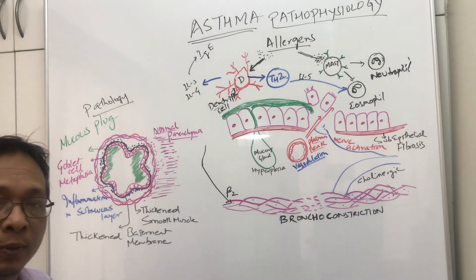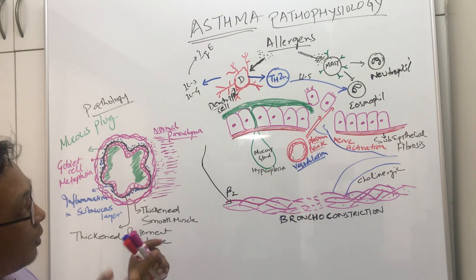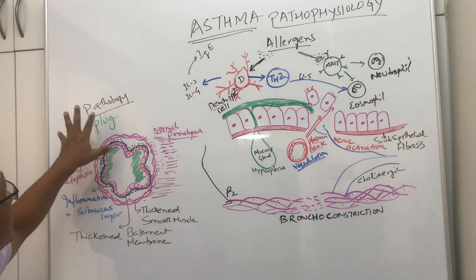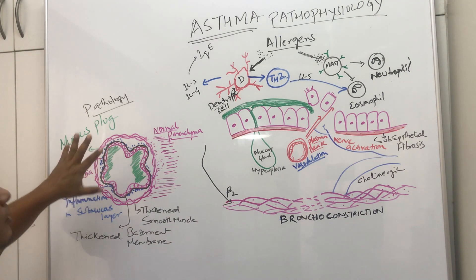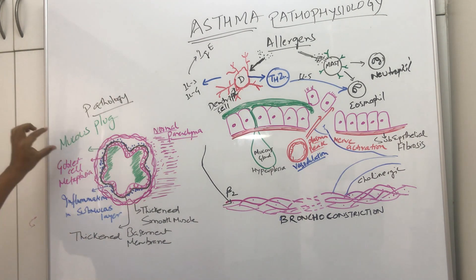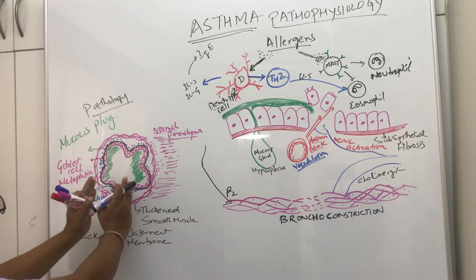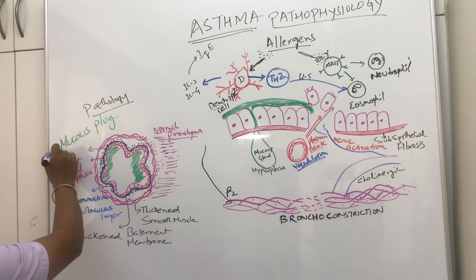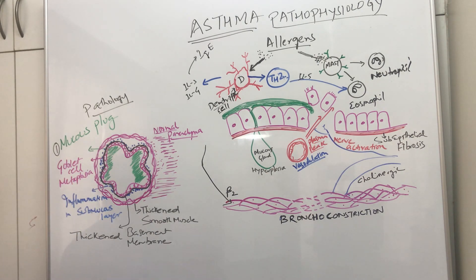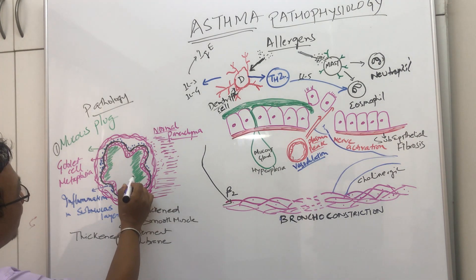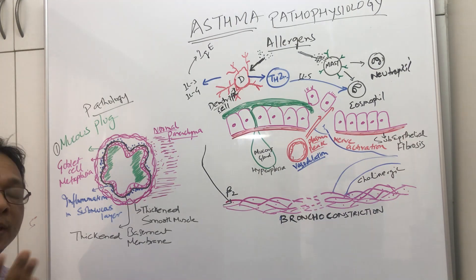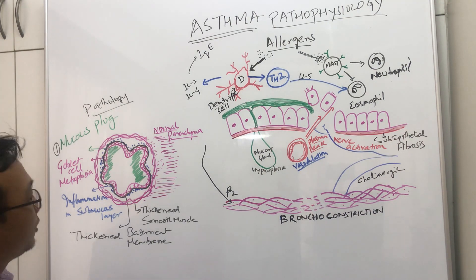Let's try to understand what causes all this pathology found in asthma. Let's understand the end result in long-term asthma. Going from inside to outside, number one is the formation of a mucus plug. The mucus gland undergoes hyperplasia, and as a result, there is plenty of mucus obstructing the lumen. Because of that obstruction, asthma is an obstructive disorder.